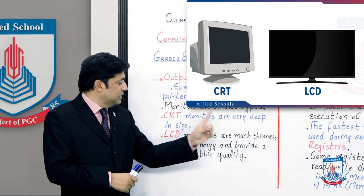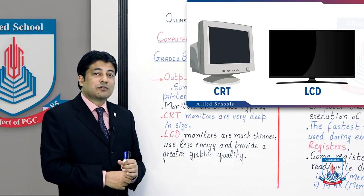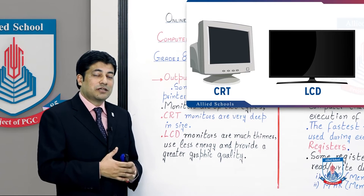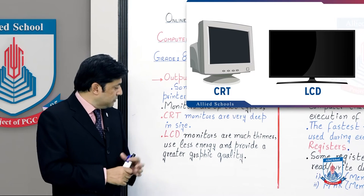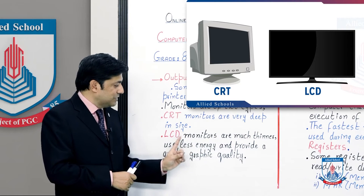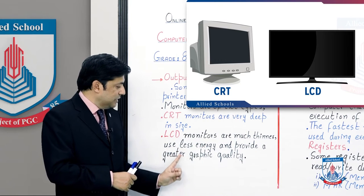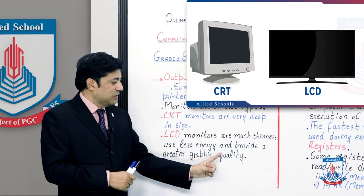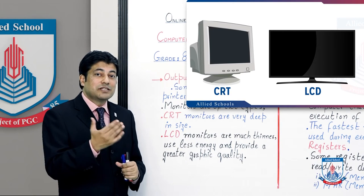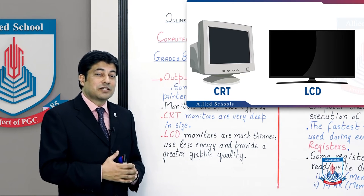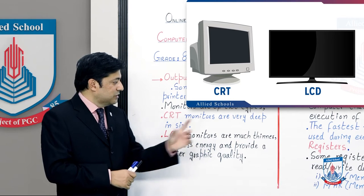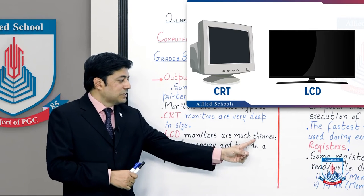CRT monitors were very large in size. The biggest problem was that their size was very big and they used a lot of energy. So now they are not used. LCD monitors are much thinner, use less energy, and provide greater graphic quality. Since we have computers with LCDs or LEDs, they are basically this type — you can get an idea that their size is thin.